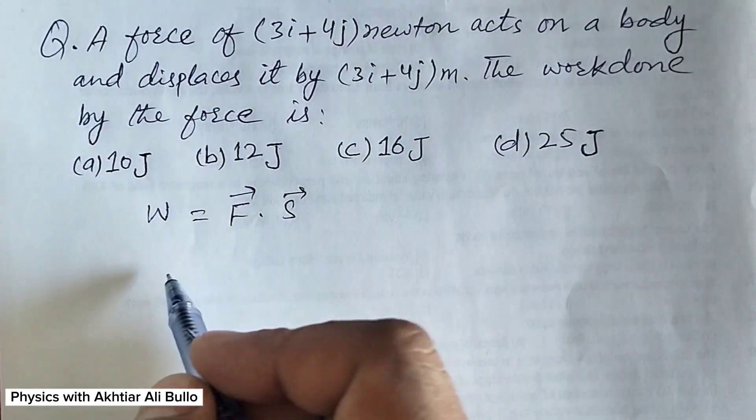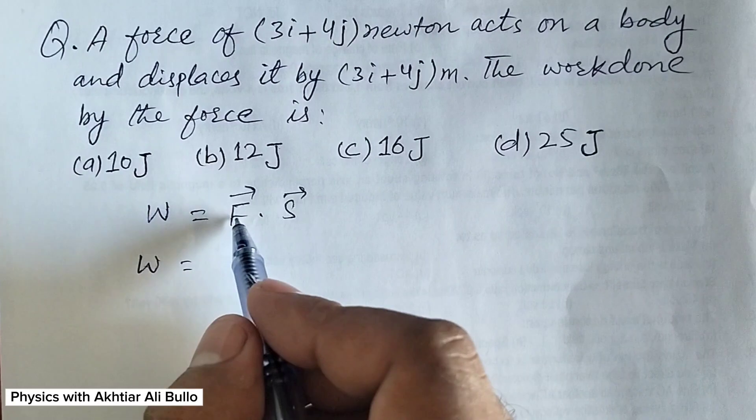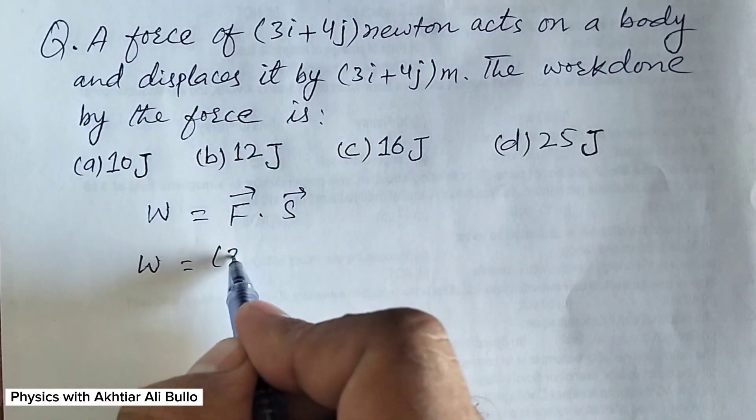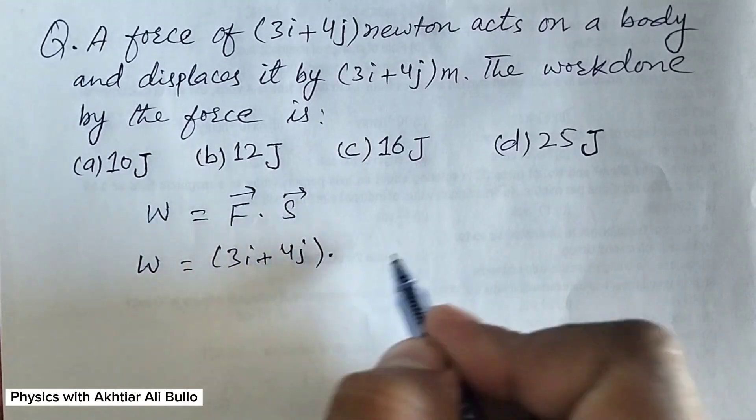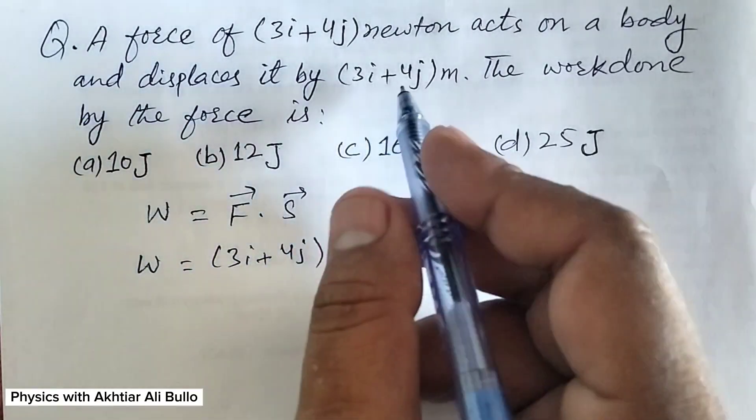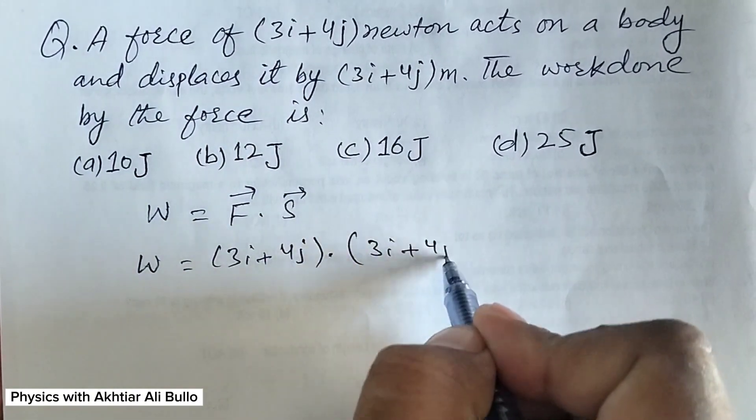So by putting the values, work will be equal to: the value of force is 3i plus 4j, dot the value of displacement is 3i plus 4j.